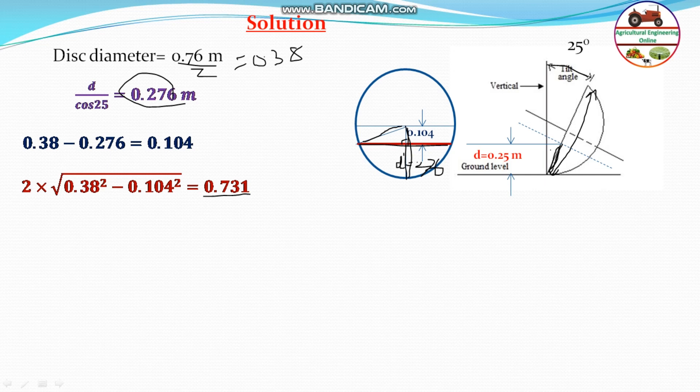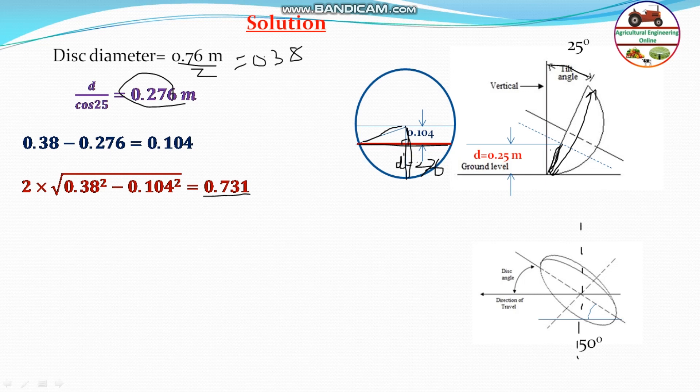After finding the chord length of 0.731 meters, we need to find the actual width of operation. If the disc angle were 90 degrees, the width would equal the full chord of 0.731 meters. If it were 0 degrees, there would be zero width. Since the disc angle is given as 50 degrees, the actual width will be less than 0.731 meters.